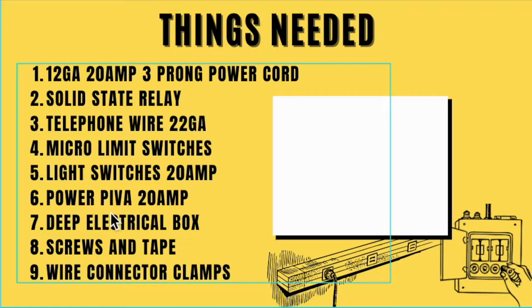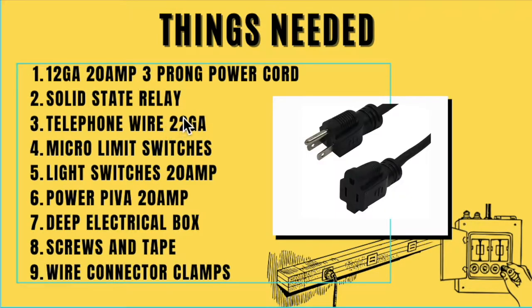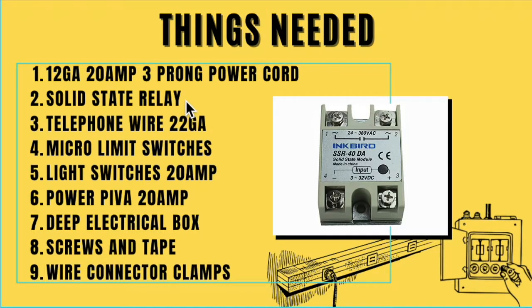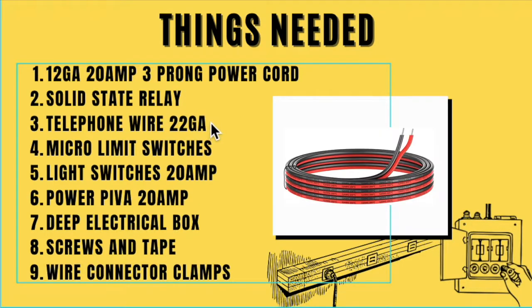Alright. So things you're going to need, 12 gauge, 20 amp, three prong power cord. And you can just go ahead and either buy it from a hardware store or take it off of something else that you know is a 20 amp and three prong. Solid state relay. I got mine on Amazon for I think 12 bucks. They have cheaper options, but I went with the mid grade solid state relay. You can put that in Amazon and hopefully find one. Anyone I'd assume will work.